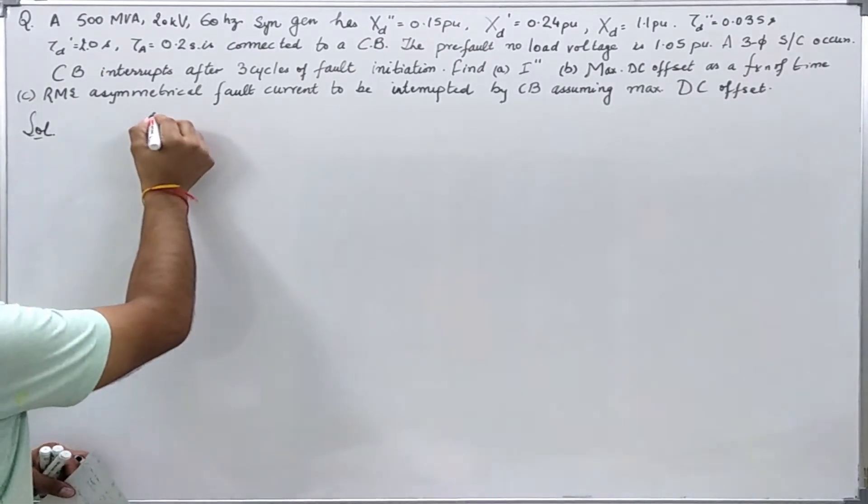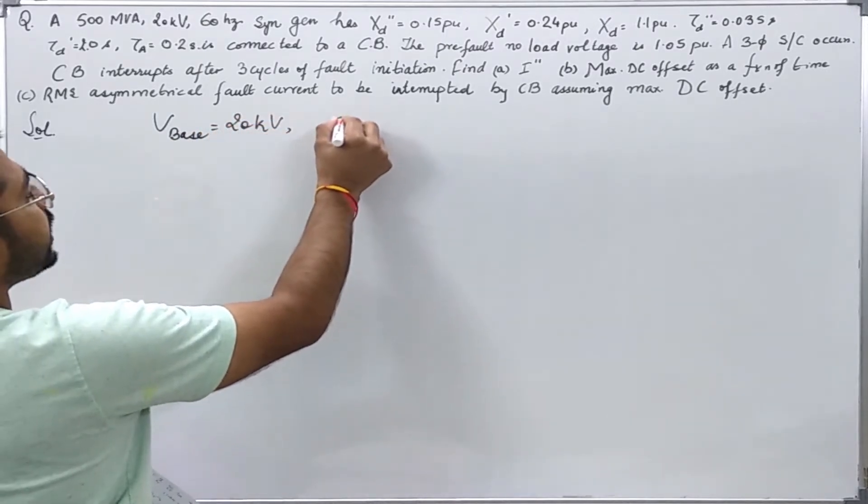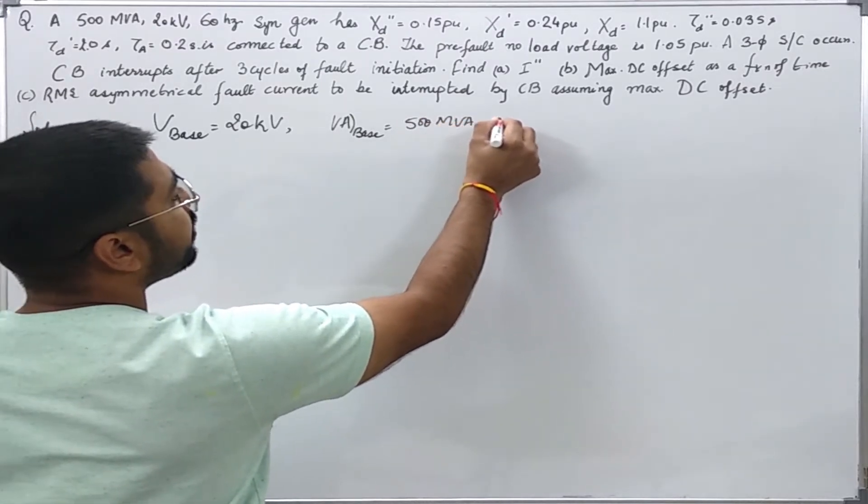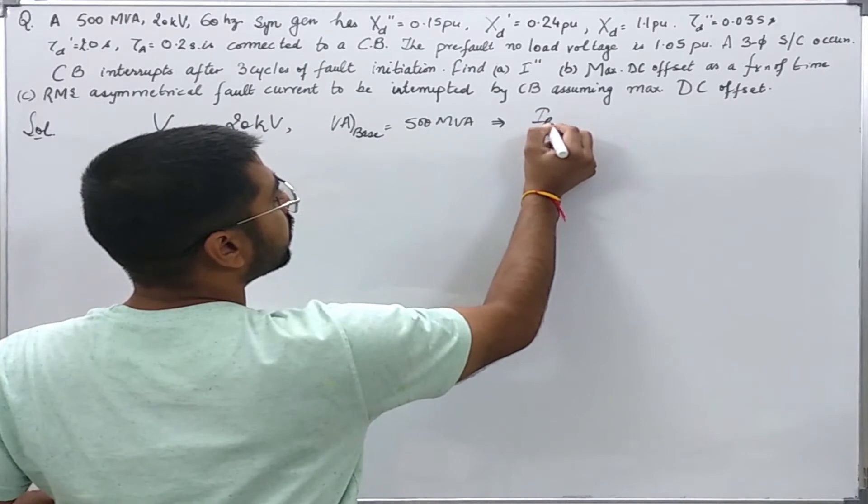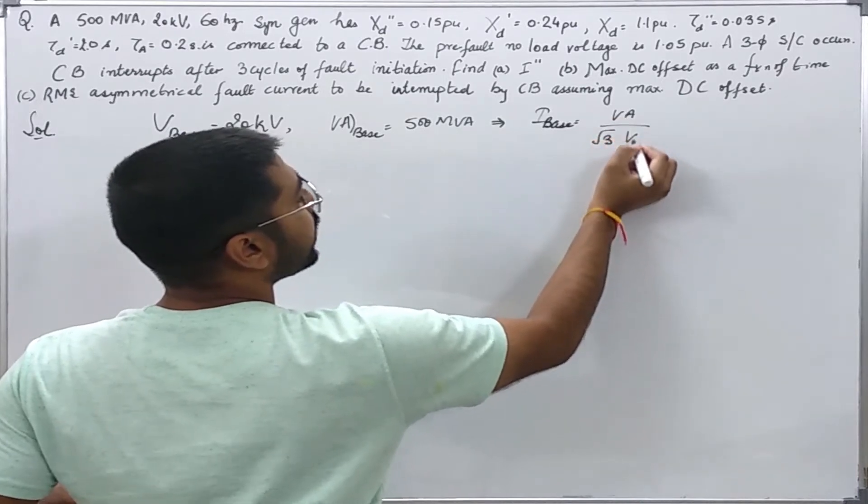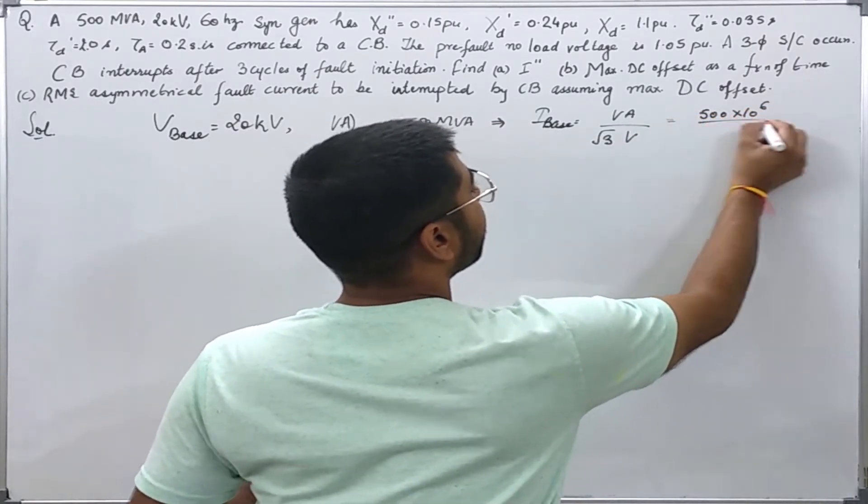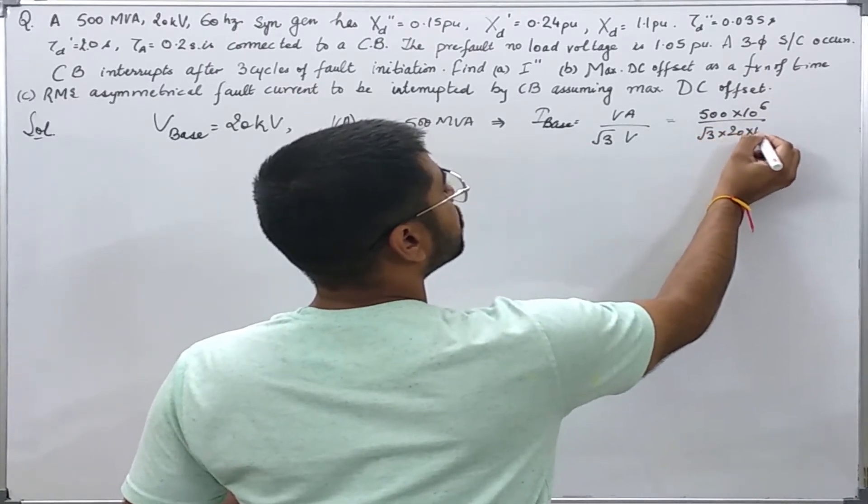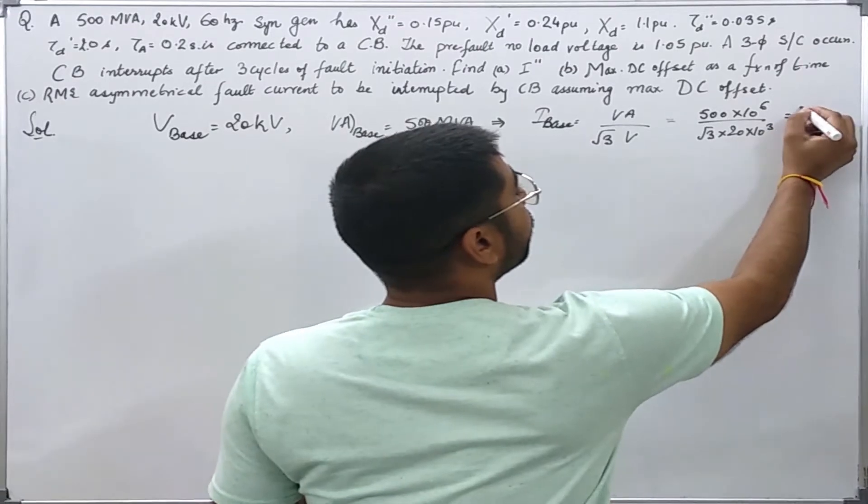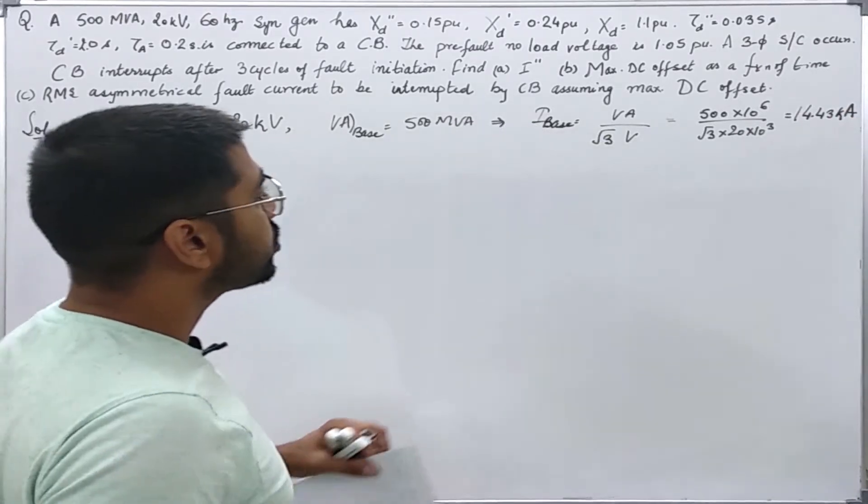We are given that the voltage base is 20 kV, the VA base is 500 MVA, then it implies that the current base will be VA base over root 3 V base which comes out to be 500 times 10 to the power 6 divided by root 3 into 20 into 10 to the power 3. Using the calculator, I got the value as 14.43 kilo amps.